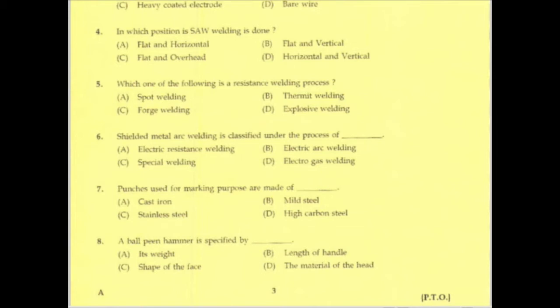Shielded metal arc welding is classified under which process? The name itself tells us — it is arc welding. The answer is electric arc welding; shielded metal arc welding is a type of arc welding.